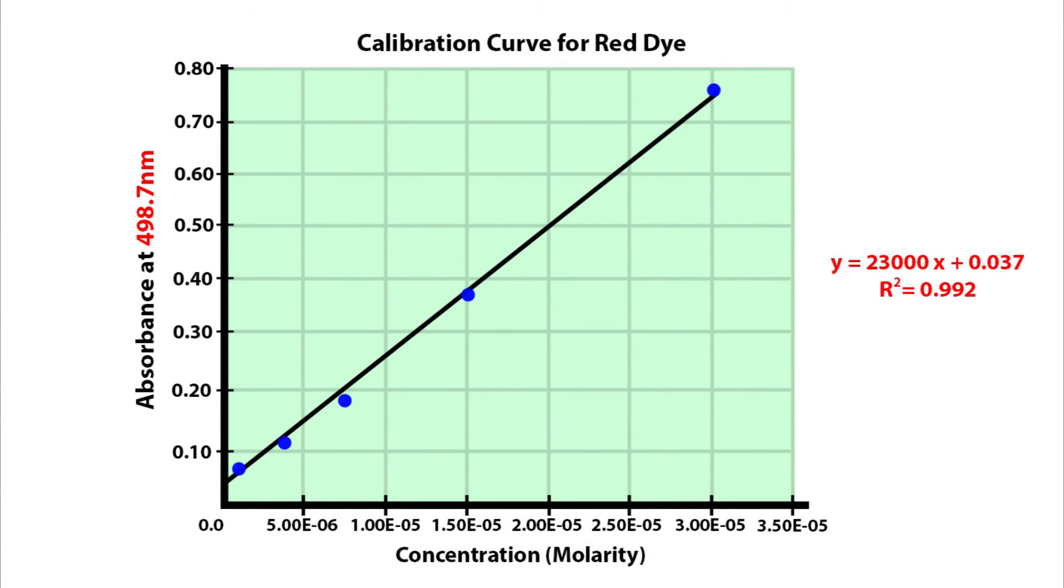Now, if you have an unknown mixture of dyes that has an absorbance of 0.422 at 498.7 nanometers, you can now find the concentration of the red dye in that substance using the line equation generated by your graph. All you have to do is plug in the absorbance, 0.422, for the y variable and solve for x.